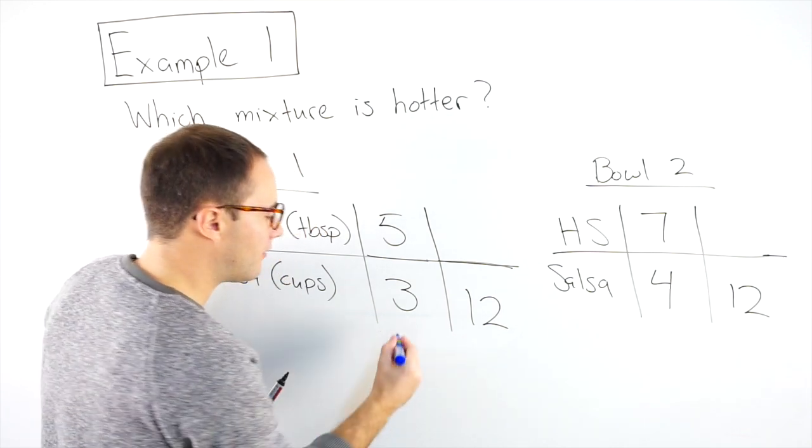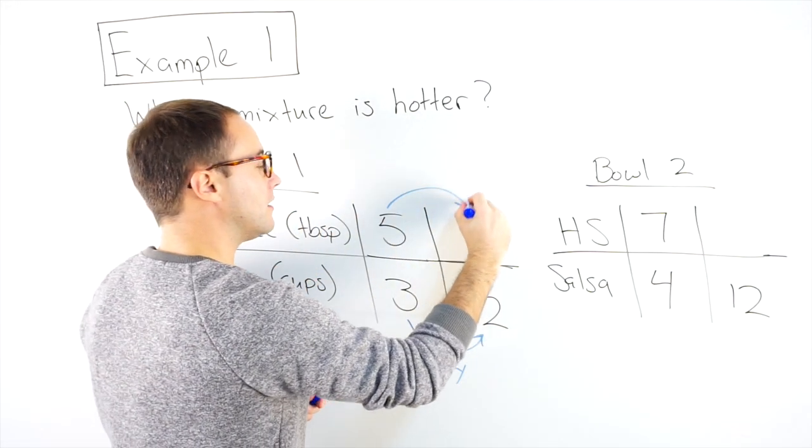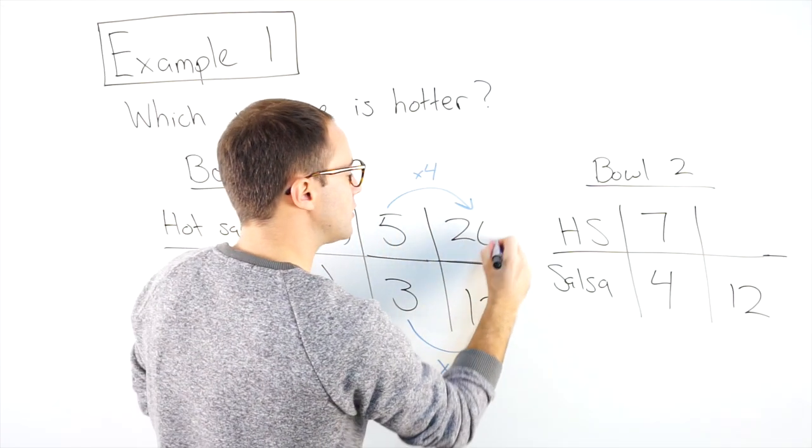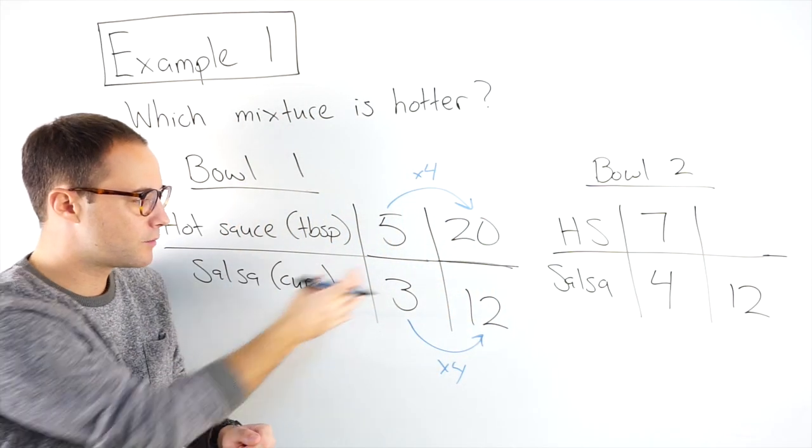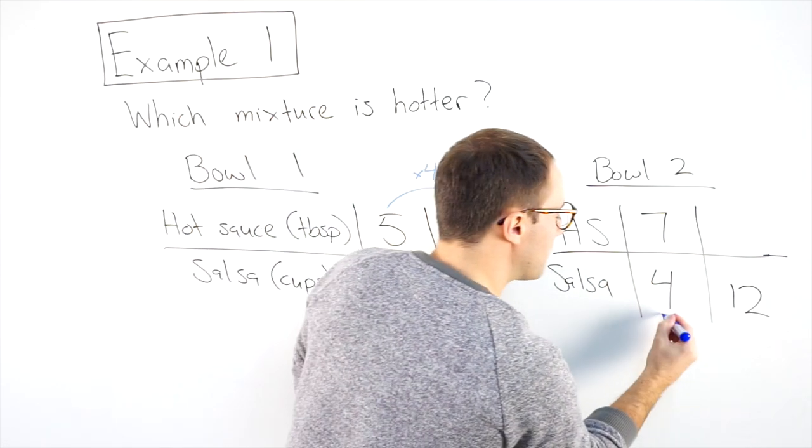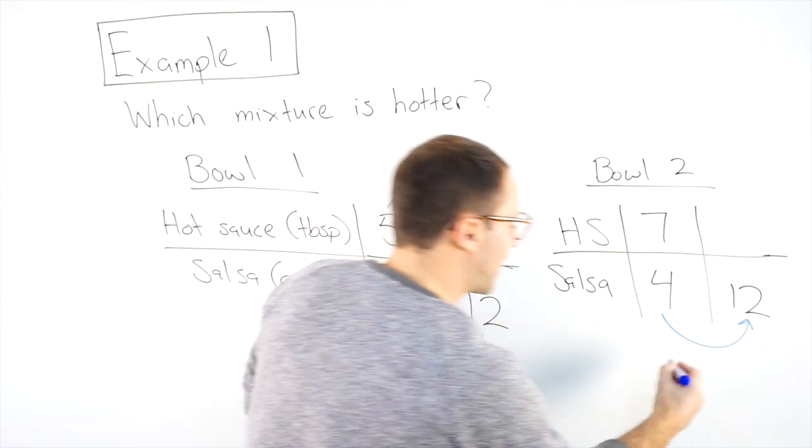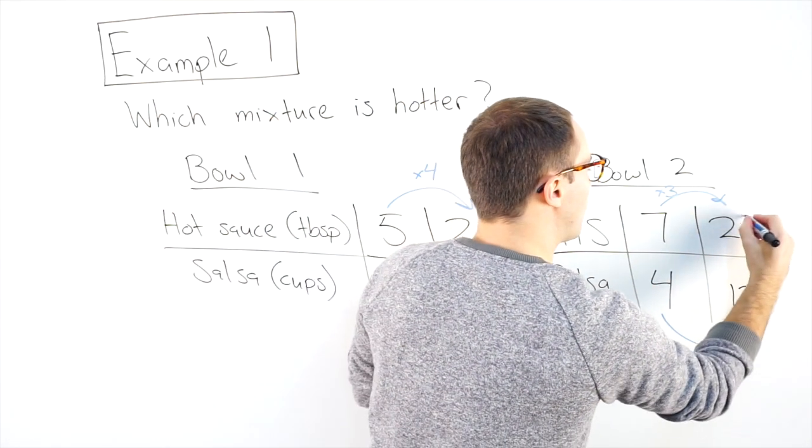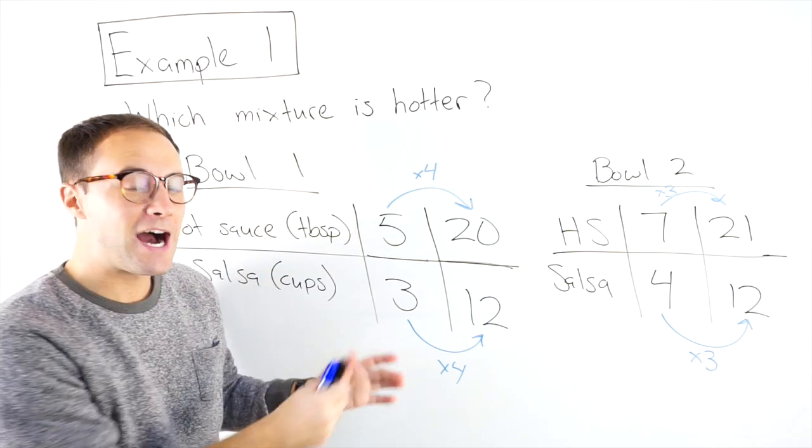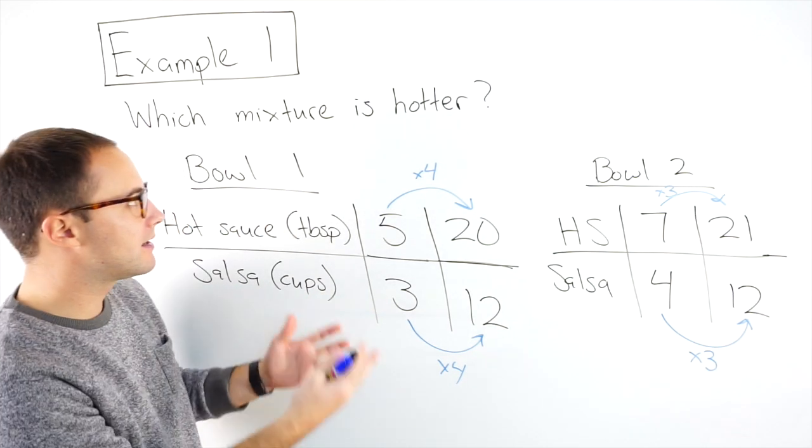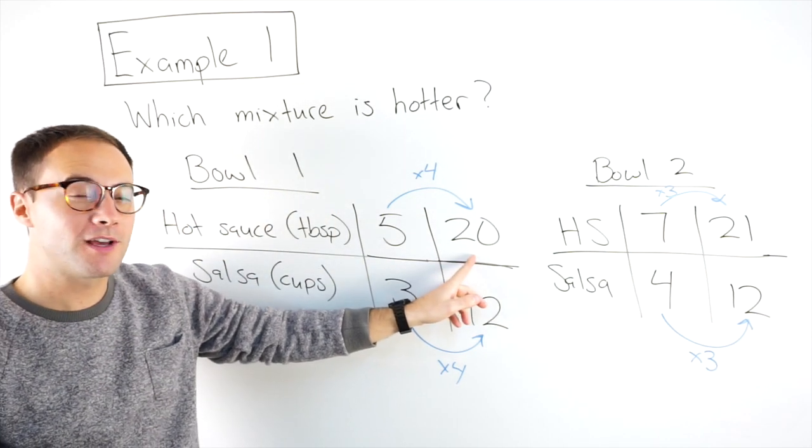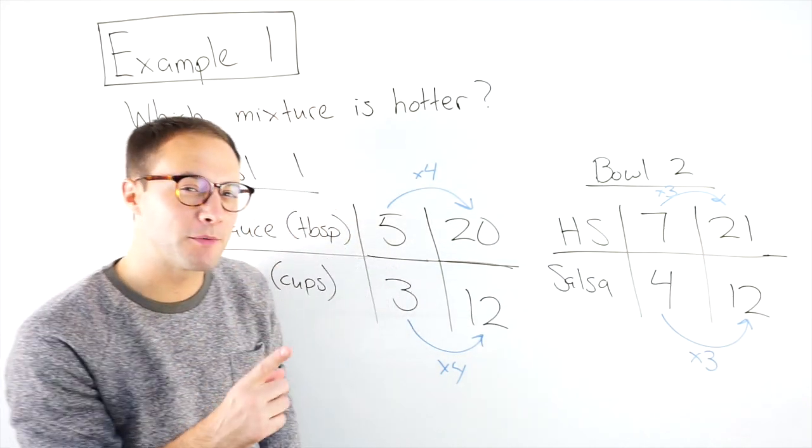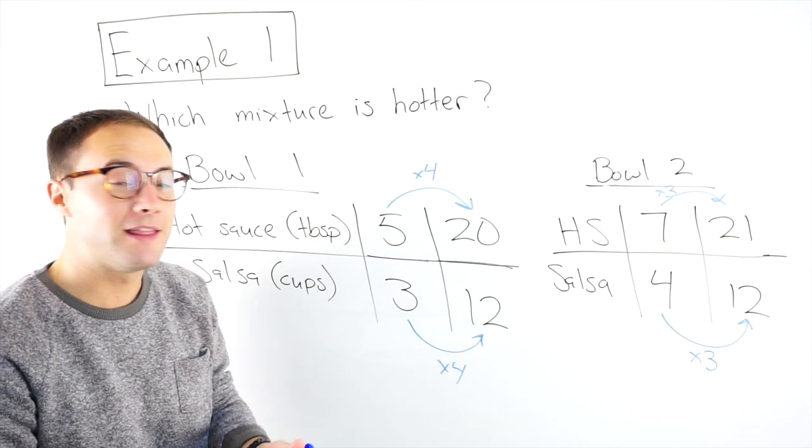To get from three to 12, I times four. So for hot sauce, I'm going to times that by four to make it equivalent. Five times four gives me 20 tablespoons of hot sauce in this mixture with 12 cups of salsa. For bowl two, how do I get from four cups of salsa to 12 cups? Times three. So for my hot sauce, I'm going to triple the amount. Seven times three is 21 tablespoons of hot sauce. Now that they both have the same amount of cups of salsa, I can compare which one's hotter. That one extra tablespoon of hot sauce means bowl two is the hotter mixture.